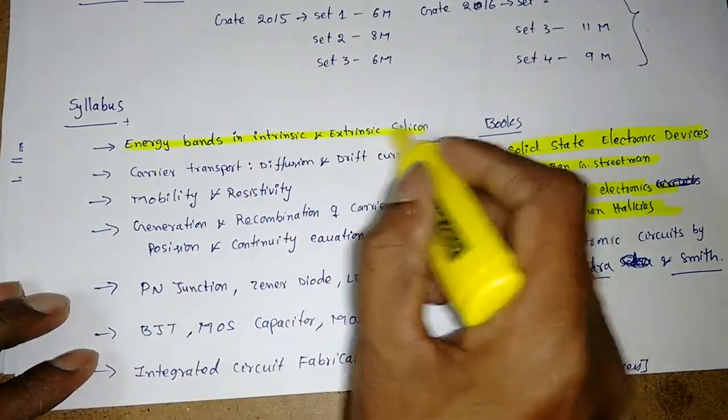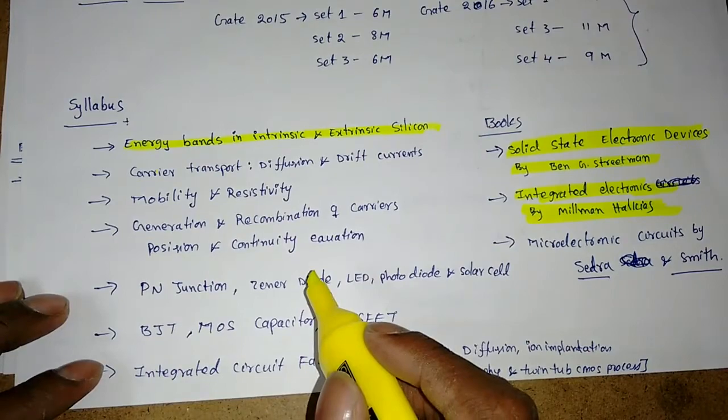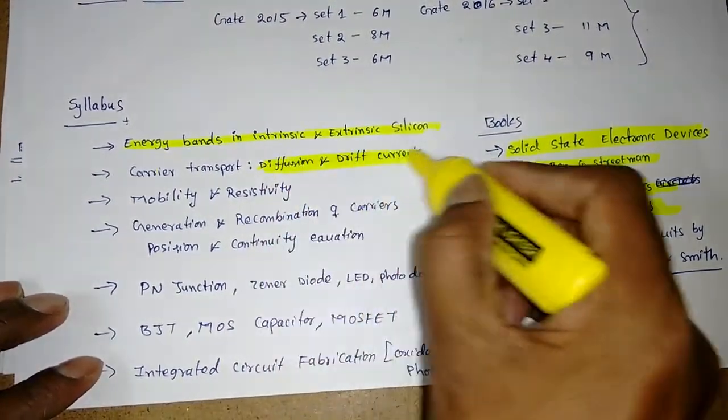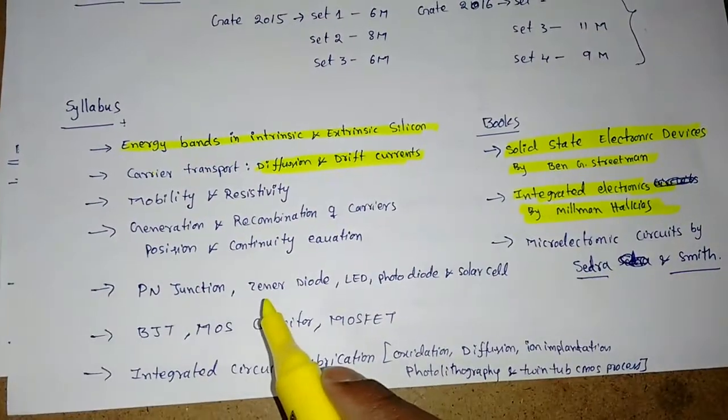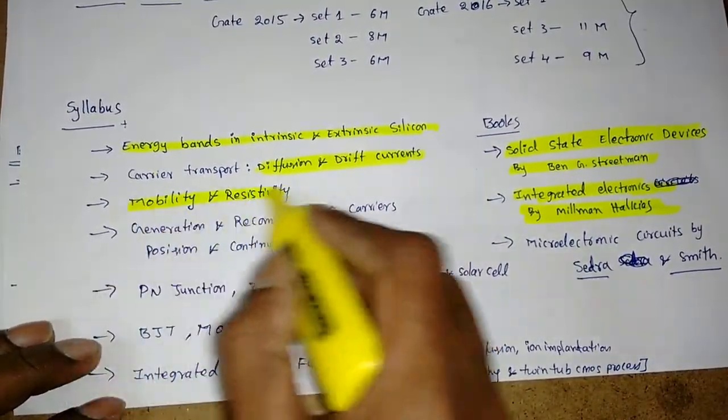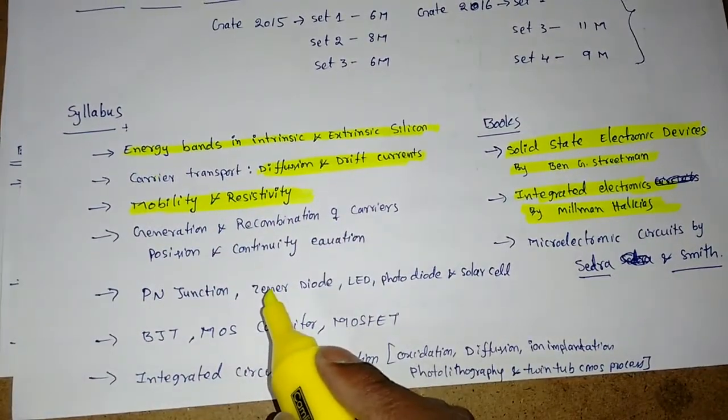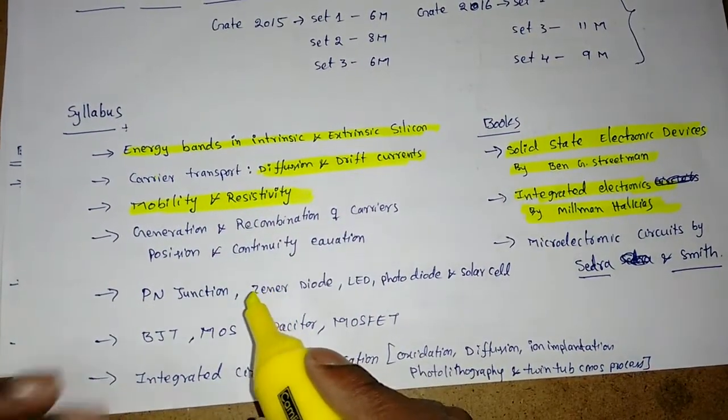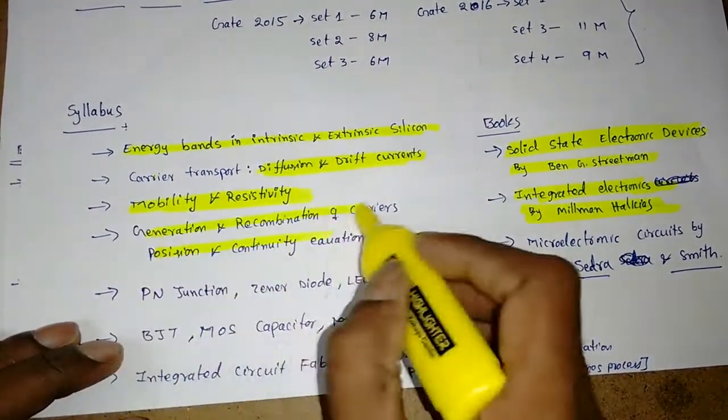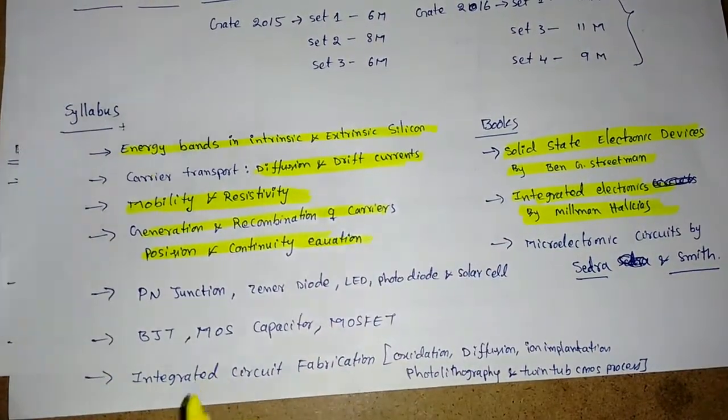That is pure and impure semiconductors. Then what is diffusion and drift currents. Next, some formulas about mobility, resistivity, or conductivity. Then there are some equations like Poisson and continuity equations for whenever there is recombination of the carriers.